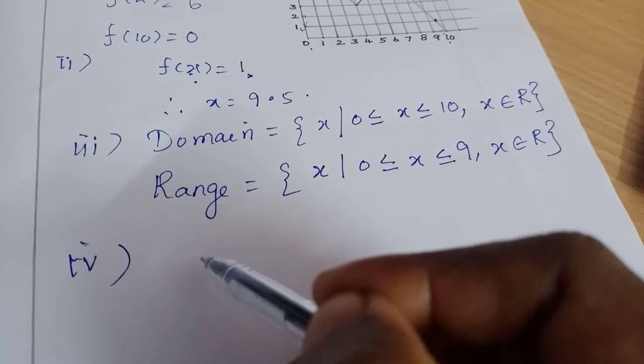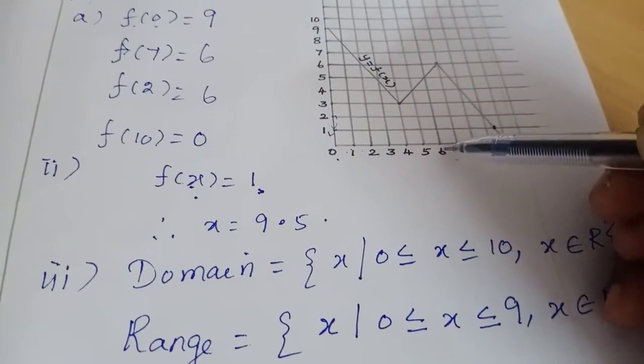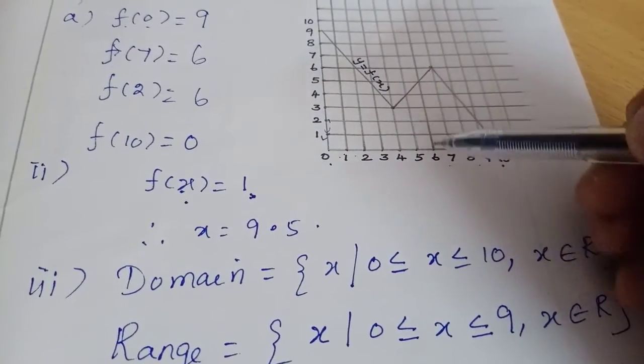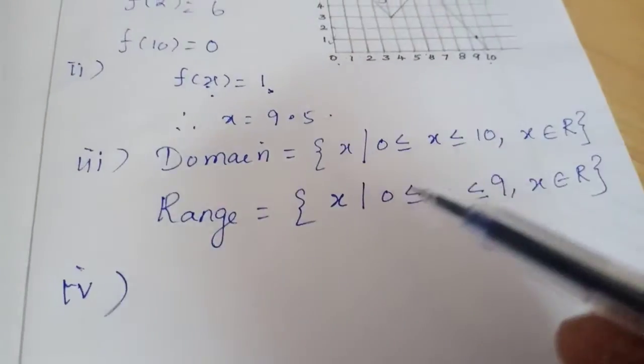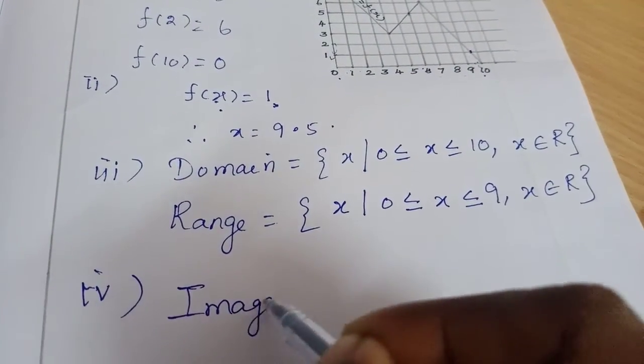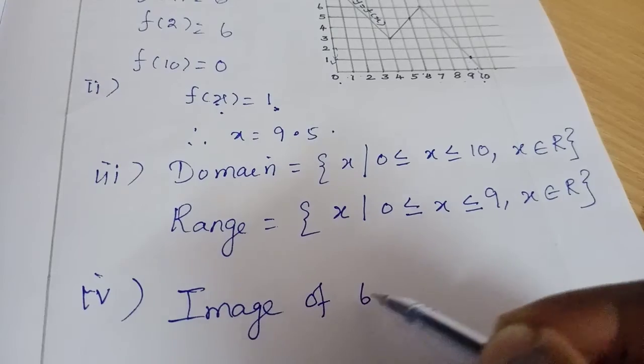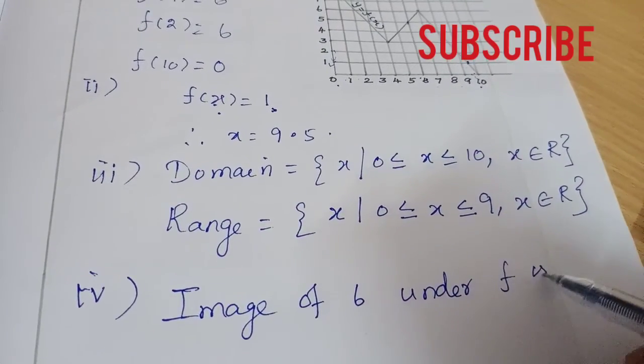What is the image of 6 under f? So the image of 6 is 5. So image of 6 under f is 5.